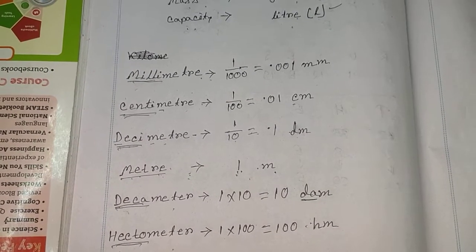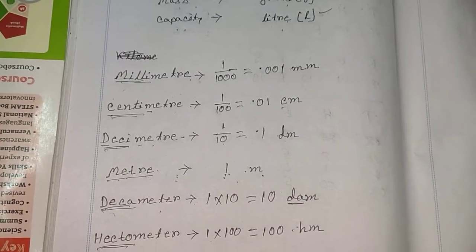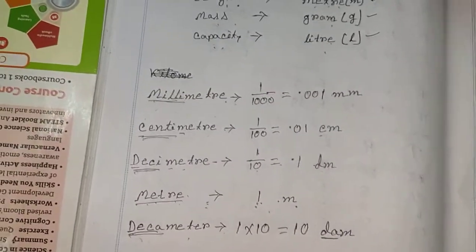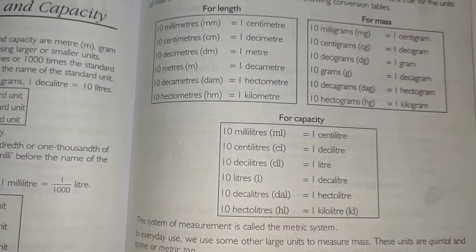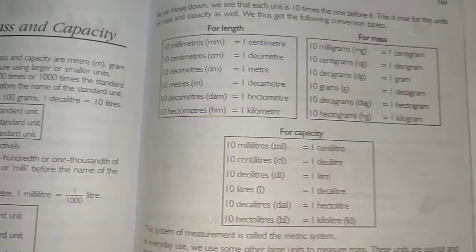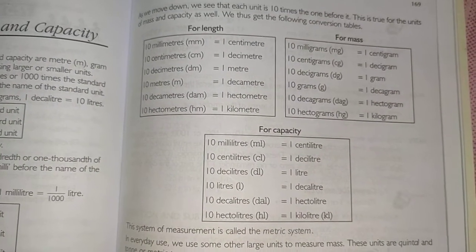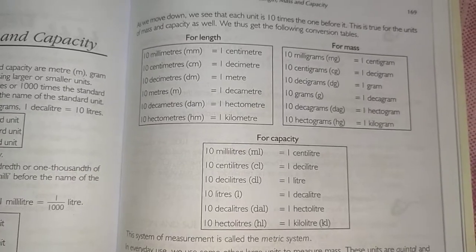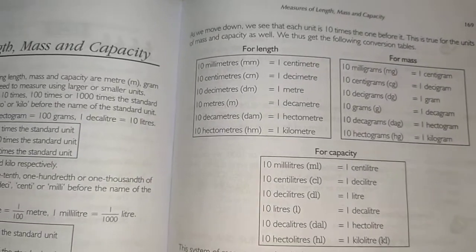A table is given in the book and you have to memorize it. The book has three tables: length, mass, and capacity — and you have to memorize all three tables.